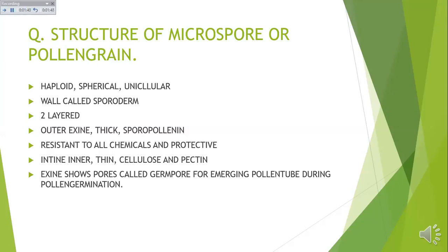The inner layer is called entine. It is thin and made up of cellulose and pectin — that is, cellulopectin. The entine is intact and is not interrupted by any pores. However, the exine shows pores called germ pores for the emergence of the pollen tube during pollen germination — the pollen tube comes out through the germ pore.